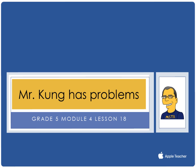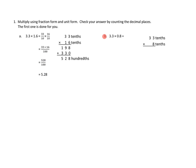We'll get some repetition working with them tonight and in subsequent nights, and we'll master it a little bit over time. So let's take a look at a couple of problems from tonight's homework. I'm going to do a combination of doing some problems and walking you through the solutions they've already provided. Problem number one is to multiply using fraction form and unit form. Check your answer by counting the decimal places. The first one is done for you.